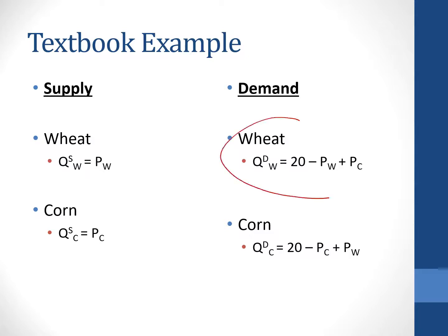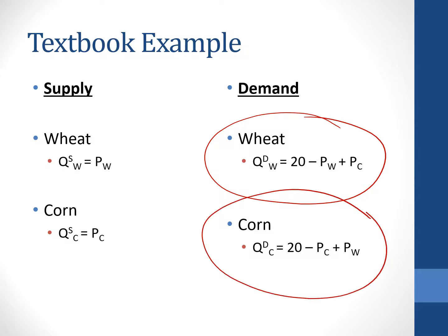Let's think about how these two goods are related. When the price of corn goes up, what happens to wheat's quantity demanded? Obviously, that increases as well — when the price of corn goes up, the quantity demanded for wheat goes up. That makes these substitutes. When the price of one good goes up and the demand for another goes up, those two goods are substitutes. If the price of Coke goes up, my demand for Pepsi goes up because I view those as substitutes. Thus, wheat and corn are substitutes.